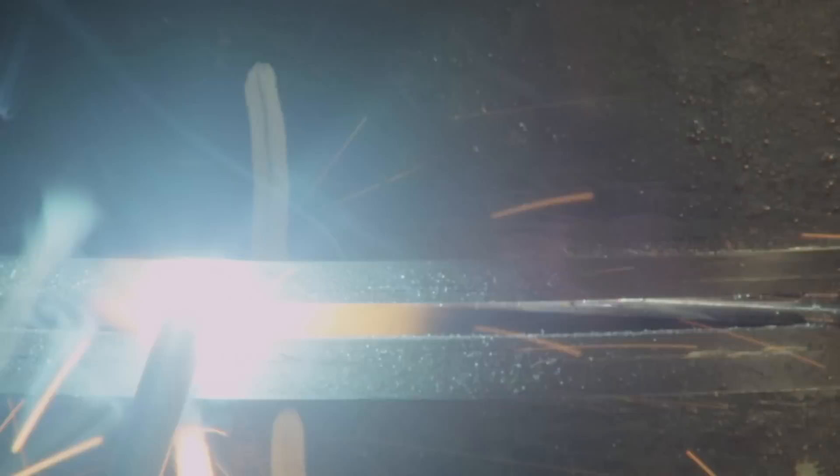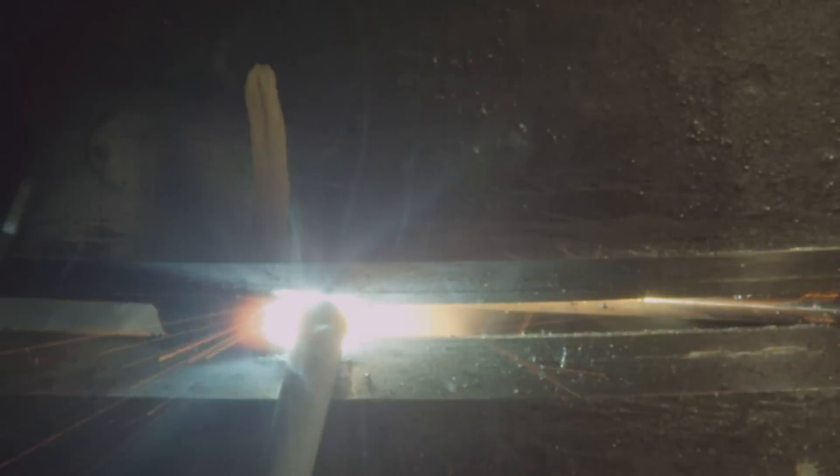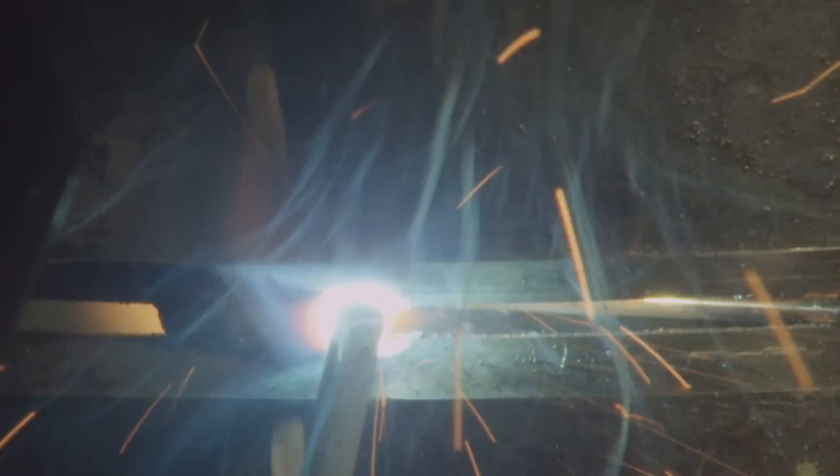Tacks are used to keep the pipes apart, facilitating open gap groove welding. They are placed 90 degrees apart and become part of the root. To begin tacking, select a new electrode with a setting of 70 to 90 amps. Center the first tack on the chalk mark.